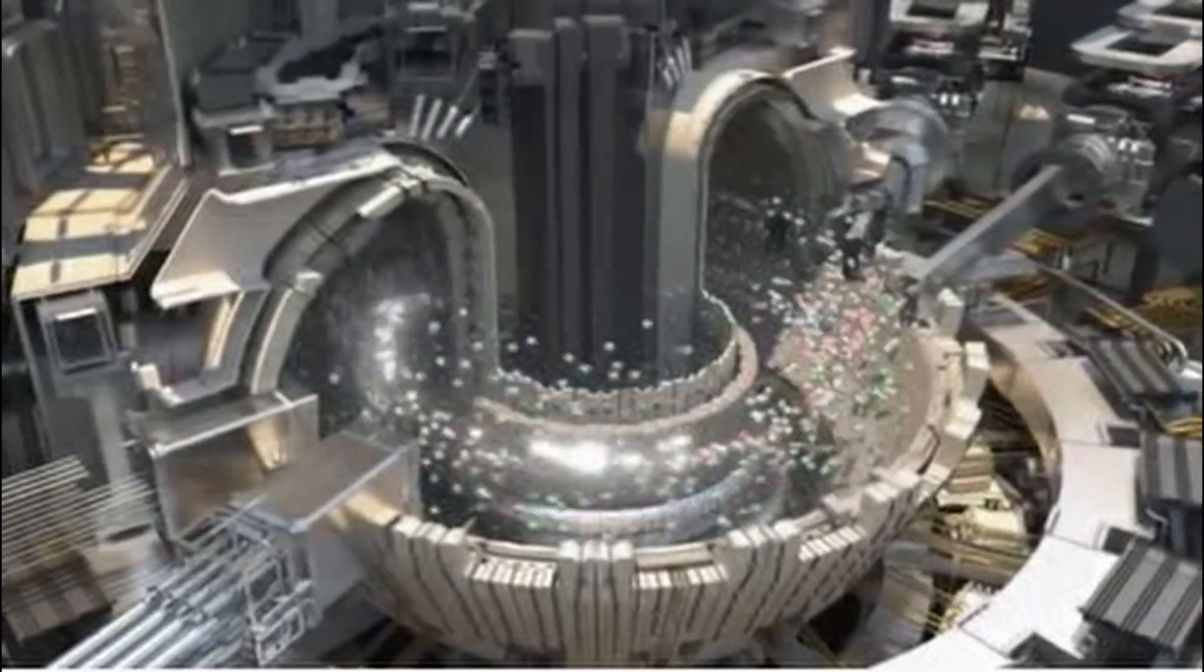Gills and basidia: The basidiocarp forms gills on its underside. In the death cap's case, the gills are not attached to the cap. These gills are lined with basidia.